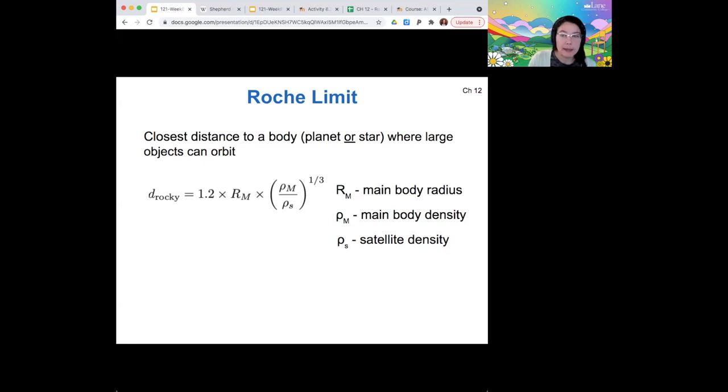So the icy body Roche limit has the same overall structure, but the coefficient is higher than it is for the rocky body. So I want to think about this a little bit. So why would we have two different Roche limits?